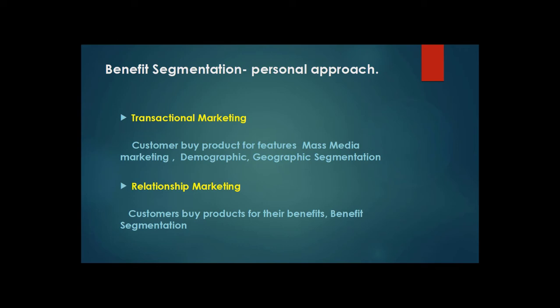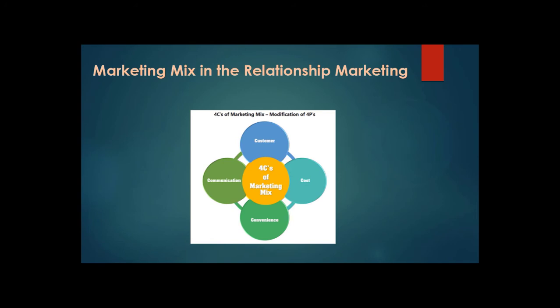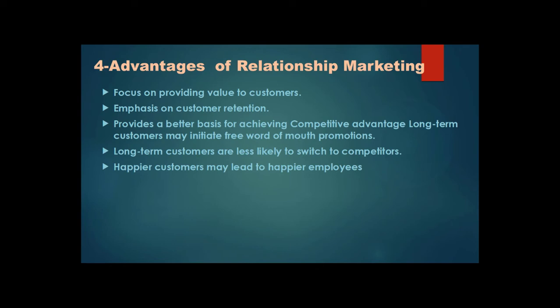Segmentation in relationship marketing has become more personal. The normal four P's of the traditional marketing mix — product, price, promotion, and place — have now been replaced by the four C's: the product has been changed to consumer solution, price is now consumer cost, place is consumer convenience, and promotion is communication with the consumer.